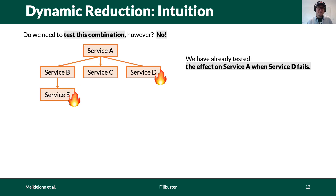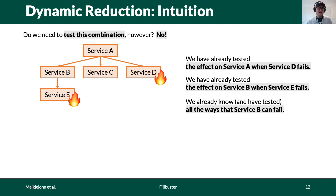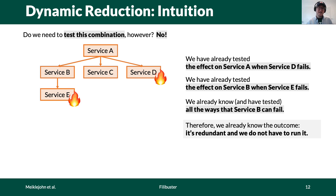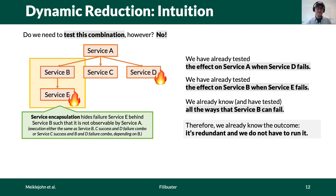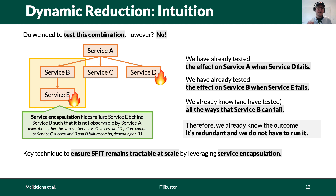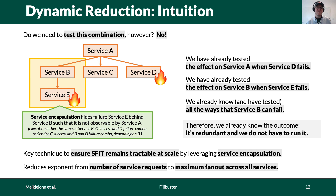The reason we don't need to test D and E failing together is that we've already seen the effect on A when D fails, and the effect on B when E fails. We already know all the ways that B can fail and impact A, along with the combinations of B and all other descendants of A. This is a redundant test because we've already observed what the outcome would be. This property is called service encapsulation, which means that service B hides the failures of E behind its own success or failure response. This is the key technique that allows service-level fault injection testing to remain tractable at scale, reducing the exponent on the space explosion from the number of service requests issued by all services to the maximum single fanout across all services.